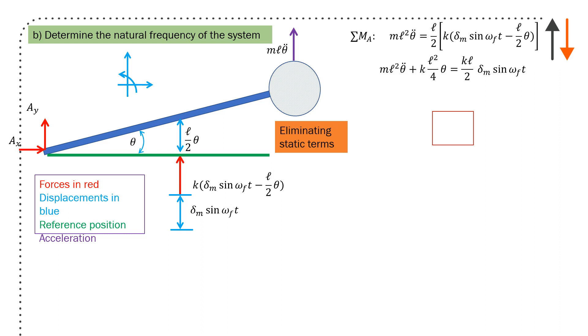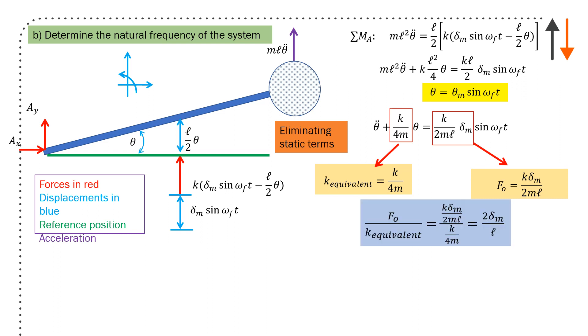Substitute in all the terms. You get theta equals theta_m sine omega forcing t. That's your forcing term. This is your k equivalent, which you're going to use for your natural frequency, and F_0, which is going to be k over delta, m, 2 to mL. In terms of F_0 over k equivalent, put in all the terms. You get 2 delta m over L.